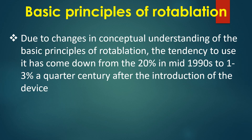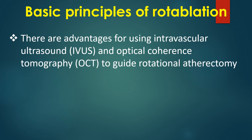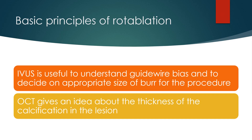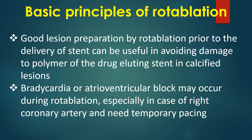Due to changes in conceptual understanding of the basic principles of rotablation, the tendency to use it has come down from 20% in the mid-1990s to 1–3% a quarter century after the introduction of the device. There are advantages to using intravascular ultrasound and optical coherence tomography to guide rotational atherectomy. IVUS is useful to understand guidewire bias and to decide on appropriate bur size. OCT gives an idea about the thickness of calcification in the lesion. Good lesion preparation by rotablation prior to stent delivery can avoid damage to the polymer of the drug-eluting stent in calcified lesions.